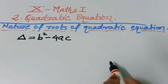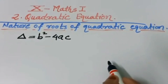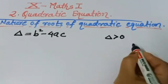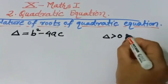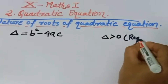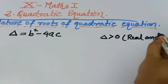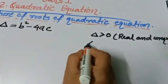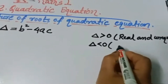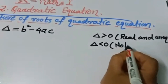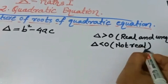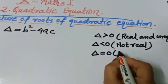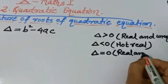There are 3 different conditions for the roots of a quadratic equation. First, if delta is greater than 0, then the nature of the root is real and unequal. Second, if delta is smaller than 0, then the nature of the root is not real. Third, if delta is equal to 0, then the nature of the root is real and equal.